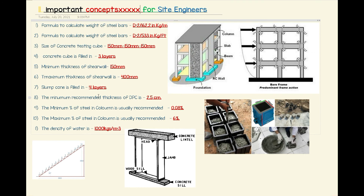At number nine, the minimum percentage of steel in columns is 0.8% and the maximum percentage is 6%.